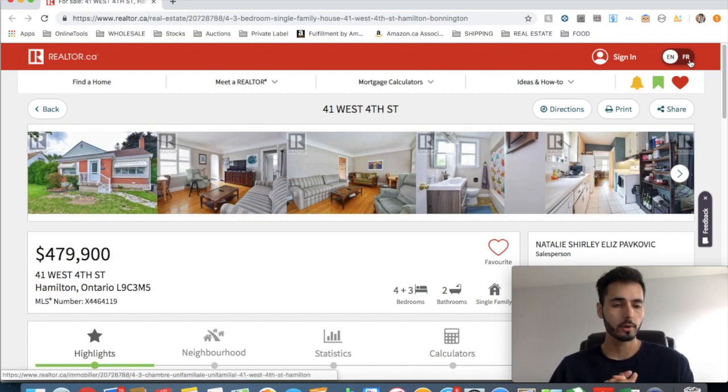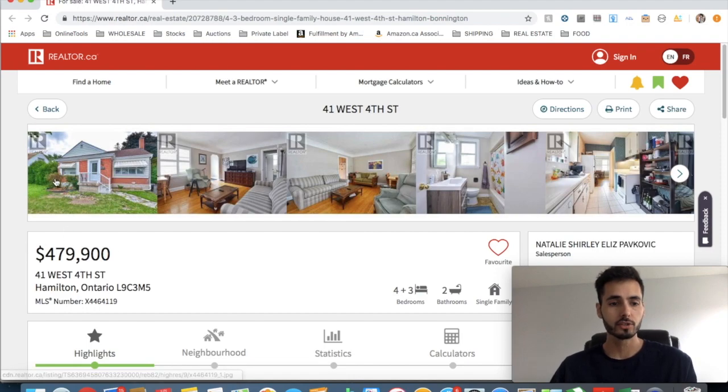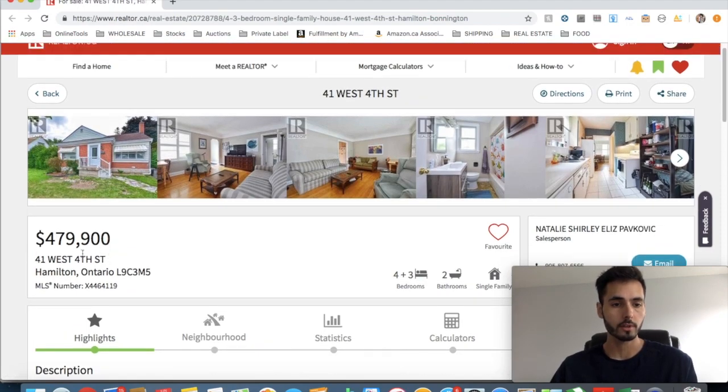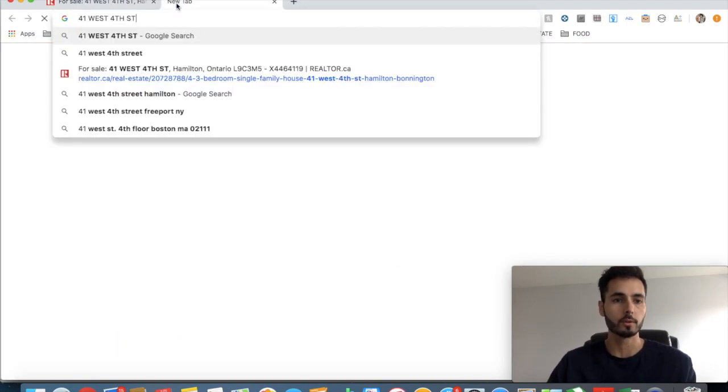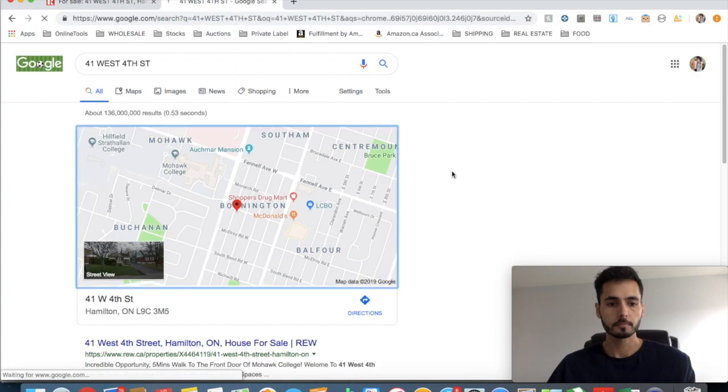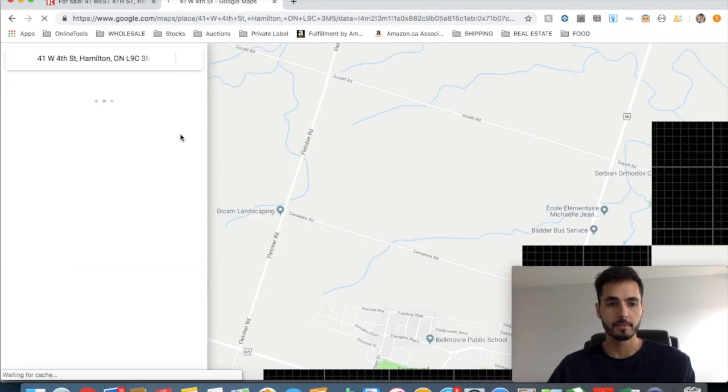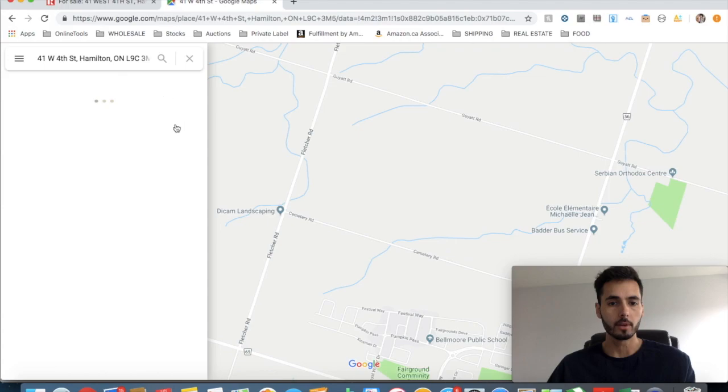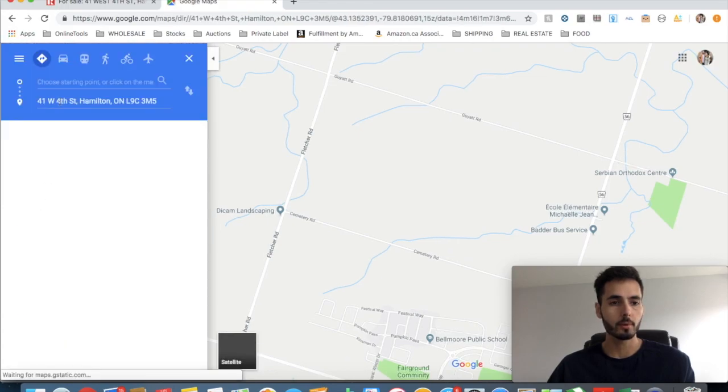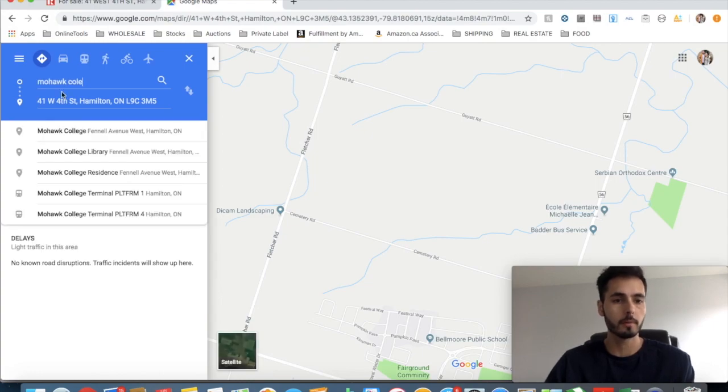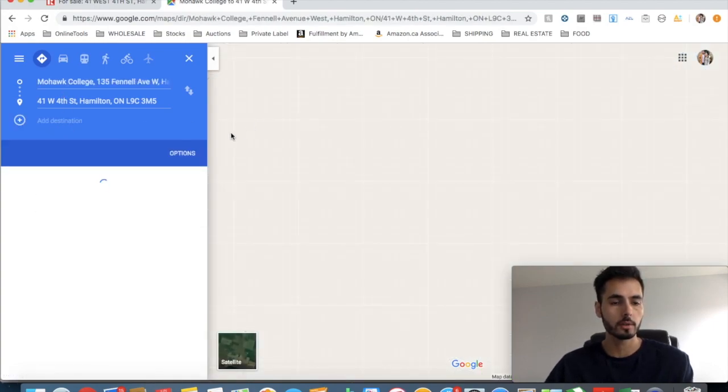Okay guys, here we are. We are now back on the computer. This is a deal that's currently listed. I'm going to analyze this deal and find out if it's a good deal or bad deal. Like I said, it's a student rental house currently on realtor.ca, listed for $480,000. Now I checked this address, and this is what I would typically do. I would look up the address for a student rental specifically. I would go to Google Maps and I want to see the proximity to the college. We're talking about Mohawk College here.